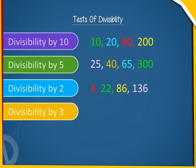4. Divisibility by 3. A number is divisible by 3 if the sum of all its digits is divisible by 3. For example, 15, 84, 123, 4212.